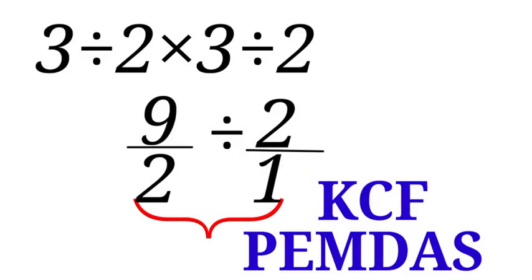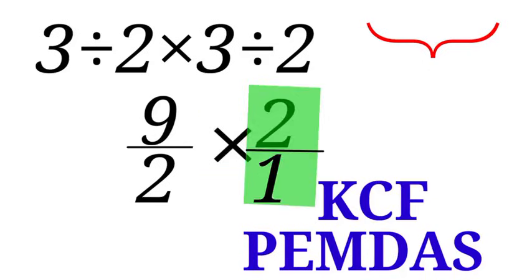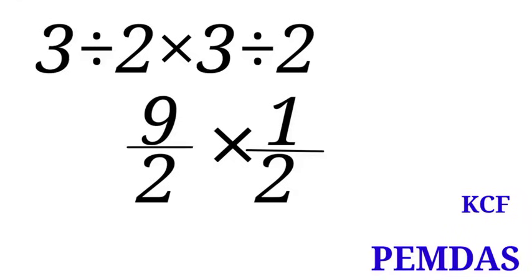So now let us apply. For keep, we are going to keep 9 over 2. For change, we are going to change division to multiplication sign. And for flip, we are going to flip 2 over 1: we take 1 to the numerator and bring 2 to the denominator. So our new expression will now be 9 over 2 times 1 over 2. Now 9 times 1, that would be 9 over 2 times 2, that would be 4.